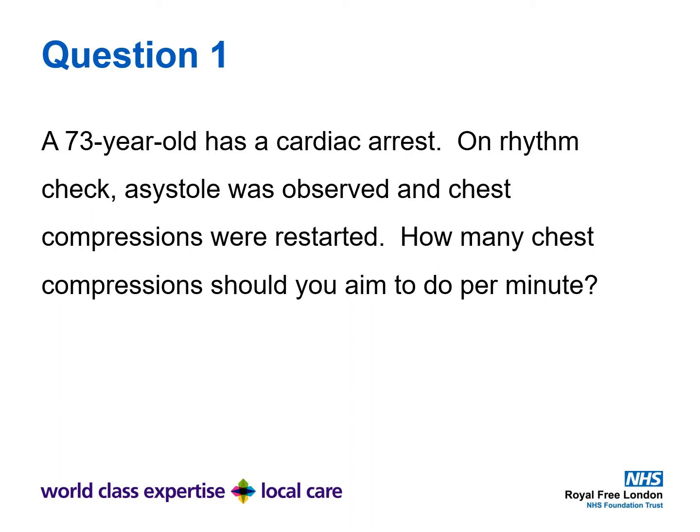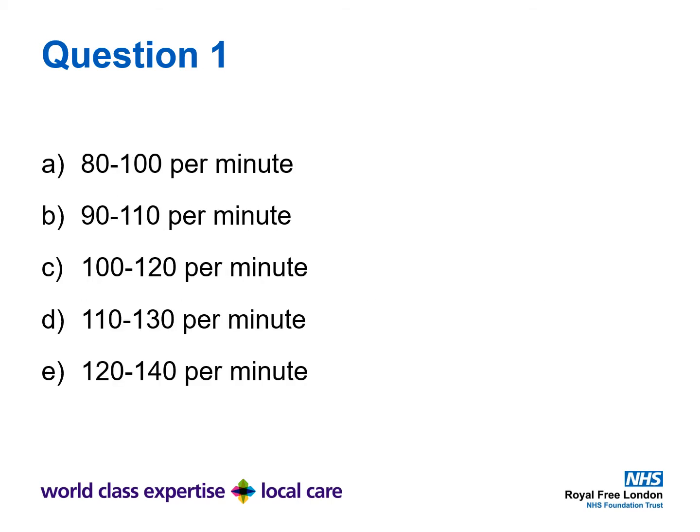Question 1. A 73 year old has a cardiac arrest. On rhythm check, asystole was observed and chest compressions were restarted. How many chest compressions should you aim to do per minute? A: 80 to 100 per minute, B: 90 to 110 per minute, C: 100 to 120 per minute, D: 110 to 130 per minute, E: 120 to 140 per minute.